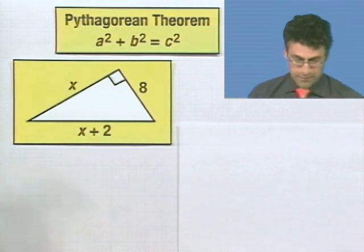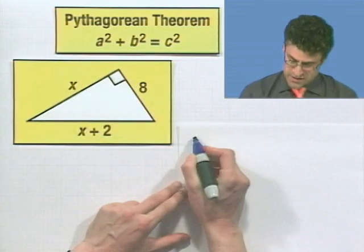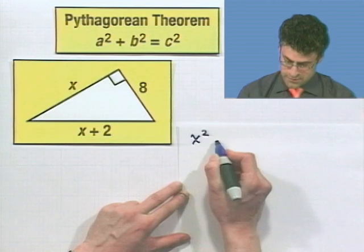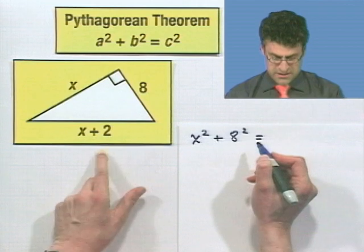And so now, how would we do it? Well, what we do is use the Pythagorean theorem, which says that this leg squared, which is X squared, plus this leg squared, which is eight squared, has to equal this leg squared.